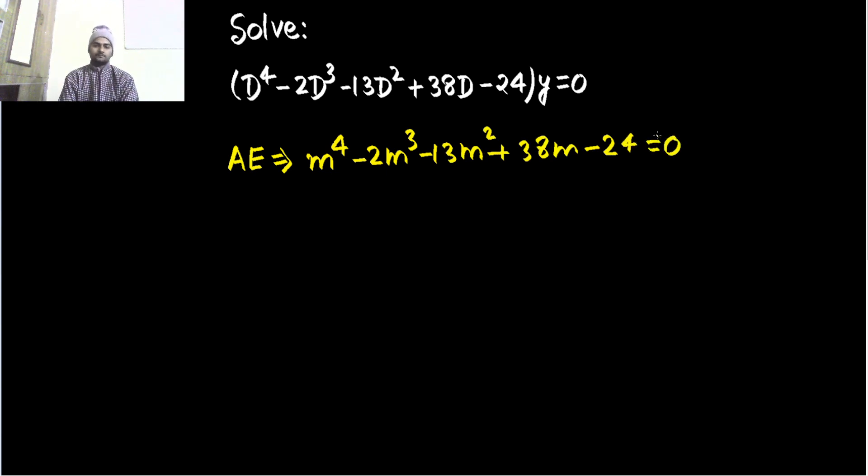First root by hit and trial—let's check if 1 is a root of this equation. If you put 1, you get 1 - 2 - 13 + 38 - 24. Positive terms give 39, negative terms give 39. Yes, this equals 0, confirming that 1 is the first root.